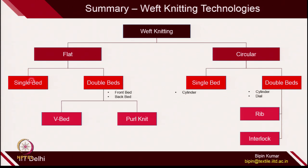The other category is double beds, where you use 2 needle beds — front bed and back bed. In double beds, we can further categorize V bed and purl knitting machines. Similarly, in circular knitting, you have single bed circular knitting machines with just 1 cylinder, and double beds where you have cylinder and dial beds. In circular double beds, we have seen ribbed knitting machines and interlocked knitting machines. These are the common general technologies in weft knitting.